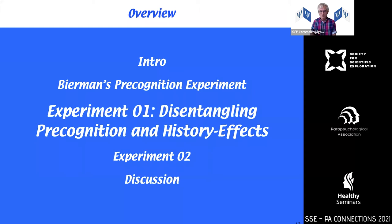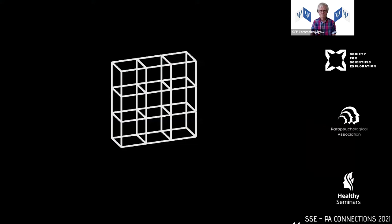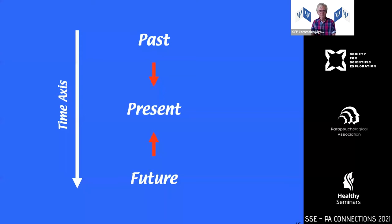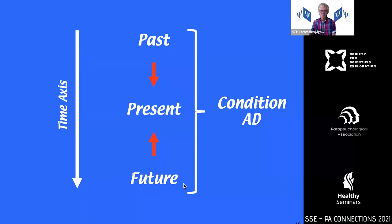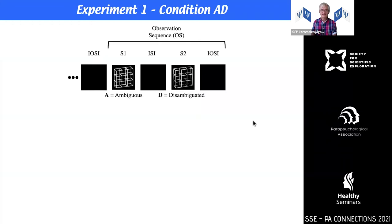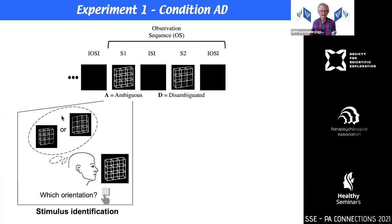So we also did experiments with Necker cube stimuli and tried to control for perceptual history. Instead of the Necker cube, we used the Necker lattice — it looks a little bit like an IKEA shelf. These are the two disambiguated versions of it. We controlled both past and future while analyzing the present, and we had two separate conditions. In condition AD, we presented these lattices in pairs: S1 followed by S2.